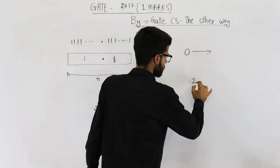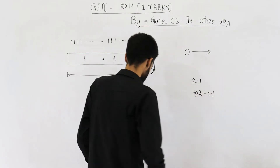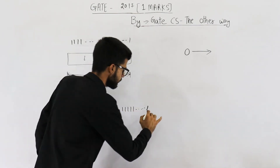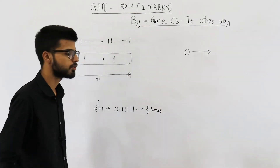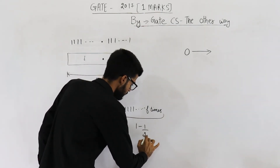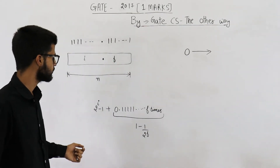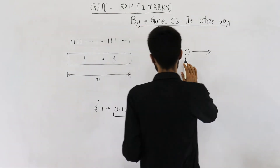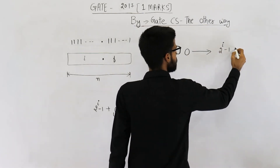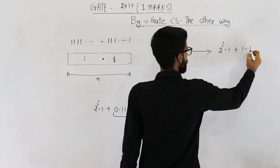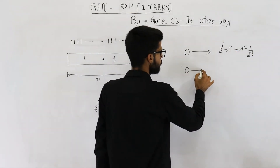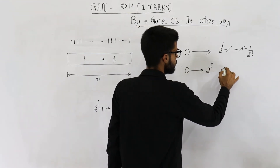The value of the fractional part 0.111...1 (f times) is 1 minus 1 divided by 2 raised to the power f. So the range of this number system is 0 to (2^i − 1) plus (1 − 1/2^f). The plus 1 and minus 1 cancel, giving the range: 0 to 2^i minus 2^(−f).